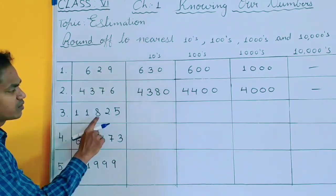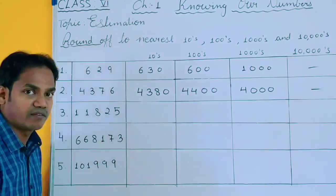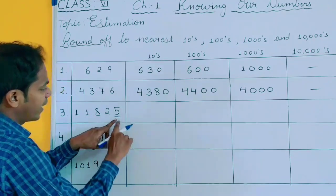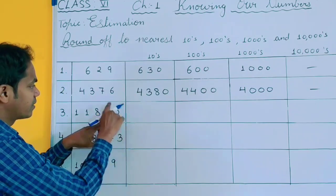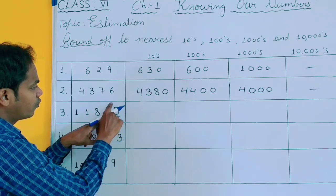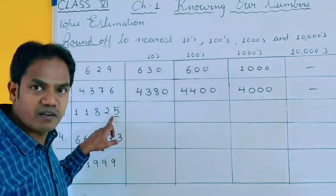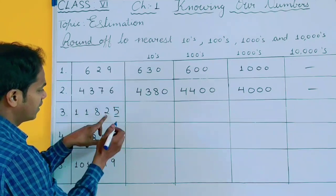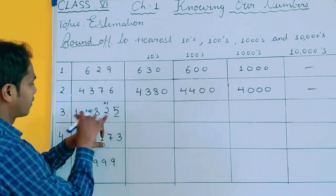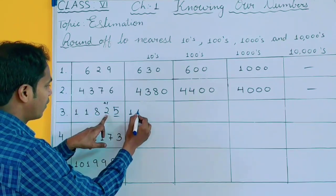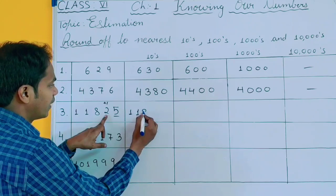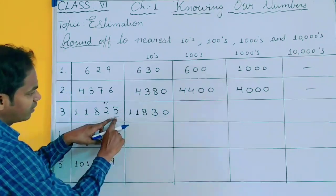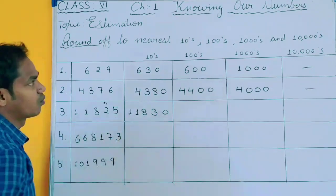Question number 3: 11,825. For rounding off to 10, the unit place is 5. According to the rule, if the unit place is 5 or more than 5, you will do plus 1 here. So this 2 will become 3, and the value you are checking will become 0 — giving 11,830.